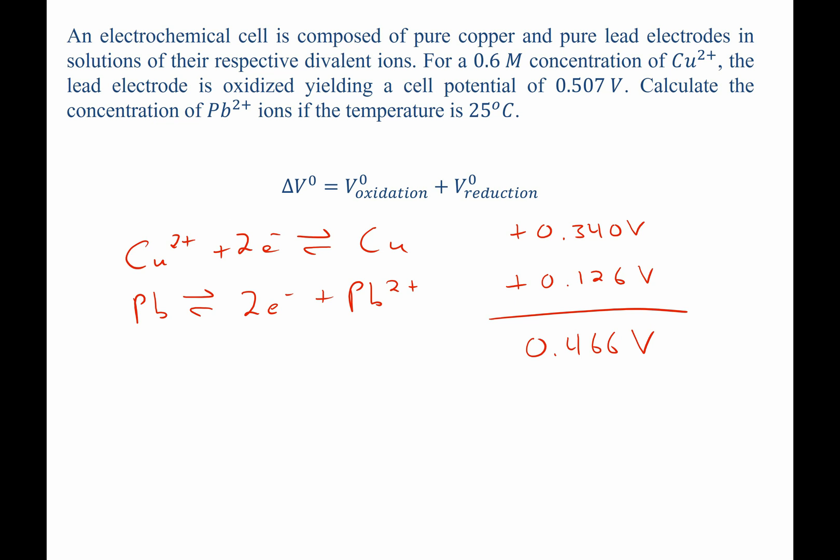Now that we have that, we know what species is reduced and oxidized, and the electrons cancel out when you add these reactions together. We can write out what we expect the voltage to be to solve for the concentration of lead 2 plus ions. The cell potential delta V equals delta V naught, the overall cell potential, minus RT over NF times natural log of K.